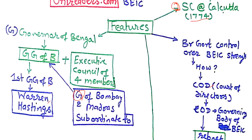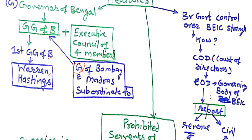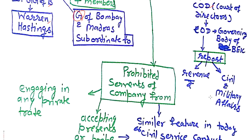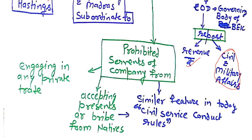The third important feature is British government control over the British East India Company. This was done by controlling the Court of Directors — the governing body of the British East India Company. Through this act, the British government forced the Court of Directors to report its revenue, as well as civil and military affairs in India. This is why it is considered the first step to control the British East India Company.